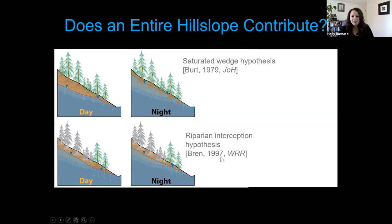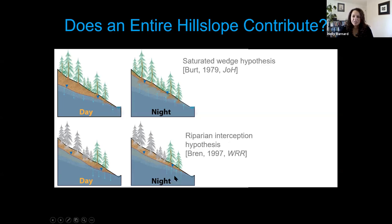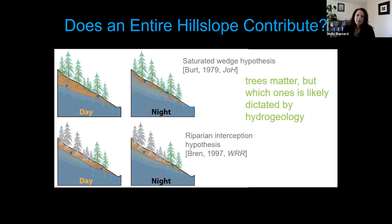In contrast, work from experimental forests where they've had the opportunity to do experimental cutting has observed that once you remove trees from the hillslope, we still get a clear expression of the transpiration signal in the stream. That led to the riparian interception hypothesis — where only trees closest to the stream, tapping directly into groundwater feeding the stream during low flow conditions, create this signal. So we know trees matter, but the hydrogeology or structure of the subsurface may play a role in when and where trees impart this control on stream flow.